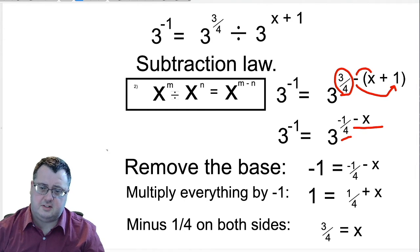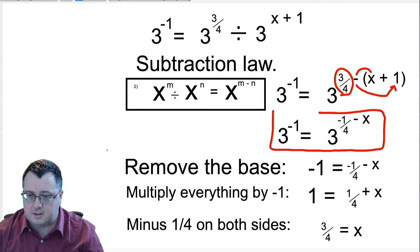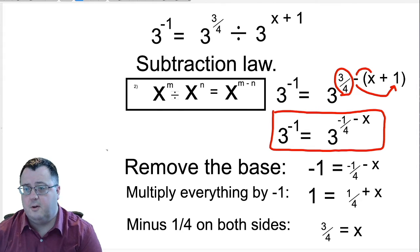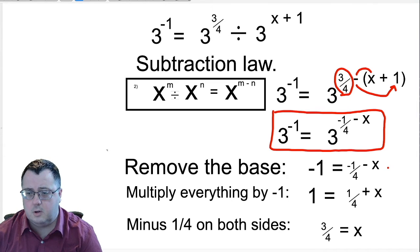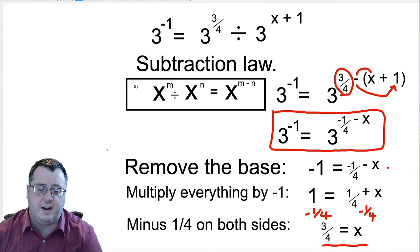Again, now that it's in this form, and I'll just wipe that out for a second. Now that it looks like this, you've got the base the same and different powers. You can equate the powers by removing the base, which will give you minus 1 equals minus 1 quarter minus x. So there's an awful lot of minuses there in that line. I want to get rid of them. So I'm going to multiply everything by minus 1, which gives me positive 1 is 1 quarter plus x. And then if I subtract a quarter on both sides, 1 minus a quarter is 3 quarters, and a quarter take away a quarter is just going to give x. So the answer here for x is 3 quarters.